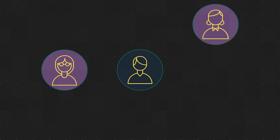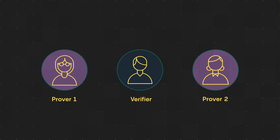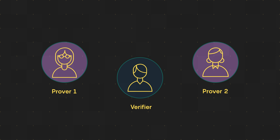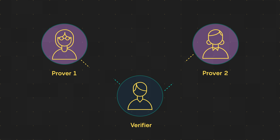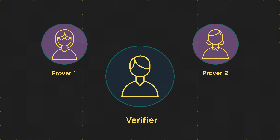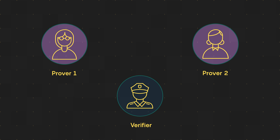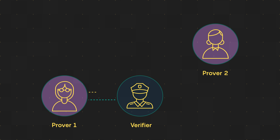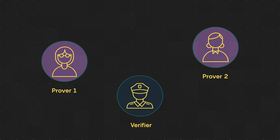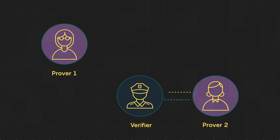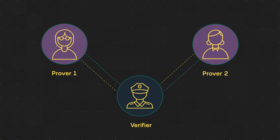An interactive proof is a kind of logical interrogation method that models computation as the exchange of messages between two parties: a prover and a verifier. Imagine the verifier is a police officer interrogating two subjects, the provers. You can't go out and confirm every single detail of the suspects' stories, but by asking the right questions and pitting your subjects against each other, you can catch them in a lie or develop confidence that the facts check out.